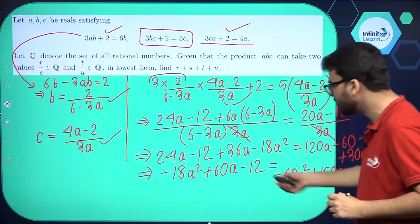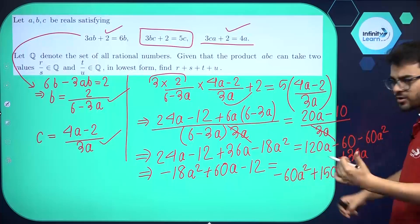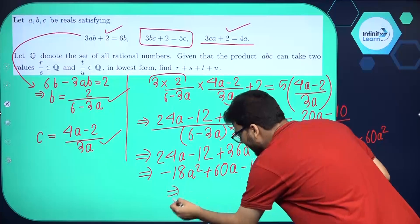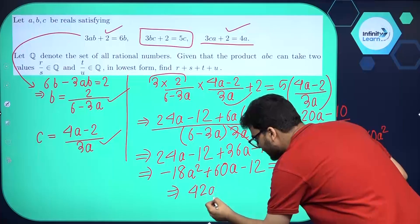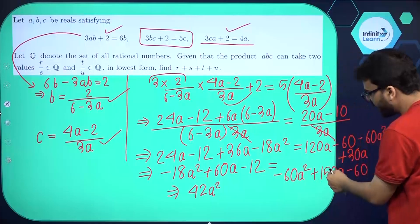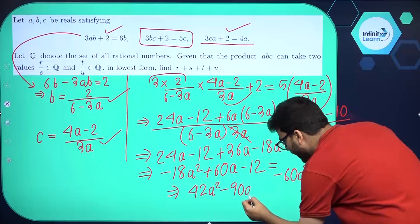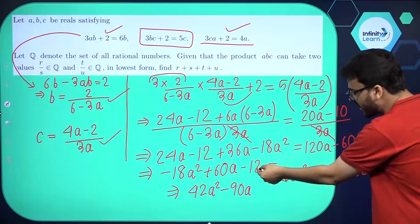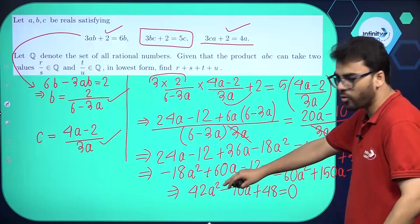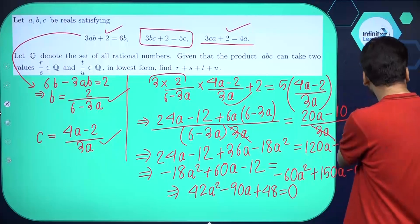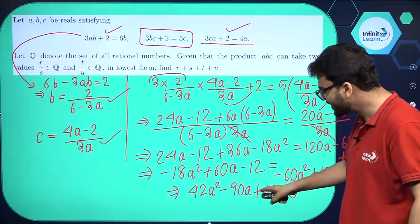Now let's take everything to one side. Taking 60A squared over: 60 minus 18 gives 42A squared. Taking the A terms over: minus 150 plus 60 gives minus 90A. Taking the constants over: 60 minus 12 gives plus 48. So the quadratic equation is 42A squared minus 90A plus 48 equals 0.